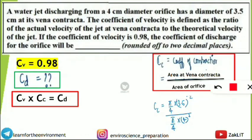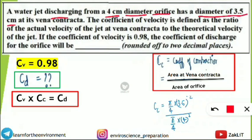The first question: A water jet discharging from a 4 cm diameter orifice has a diameter of 3.5 cm at its vena contracta. Even if you don't know what vena contracta or orifice means, no problem — you just need the formula. The key information is two different diameters: one is 4 cm (the orifice) and the other is 3.5 cm (the vena contracta).